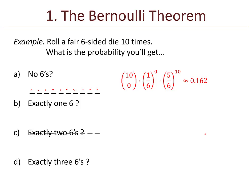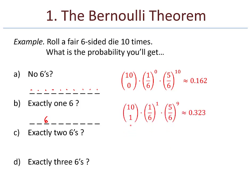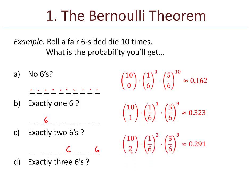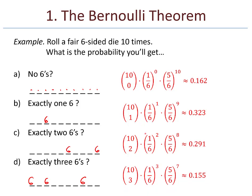How about exactly one six? In ten rolls of the die, exactly one is a six. There are ten choose one ways to place the six, and for each of those ten outcomes, the probability is one-sixth times five-sixths to the ninth. For exactly two sixes: ten choose two ways, and for each outcome, one-sixth squared times five-sixths to the eighth. For exactly three sixes: ten choose three, and for each outcome, one-sixth cubed times five-sixths to the seventh. And we see exactly the pattern.